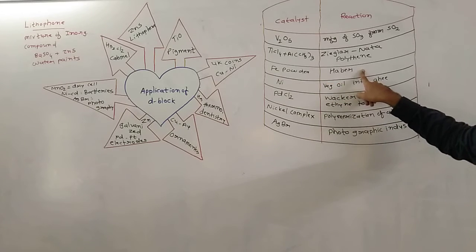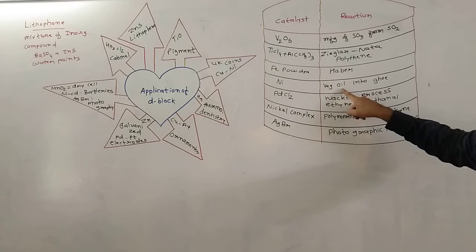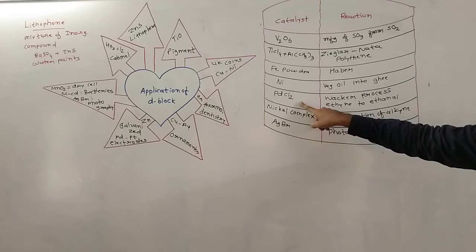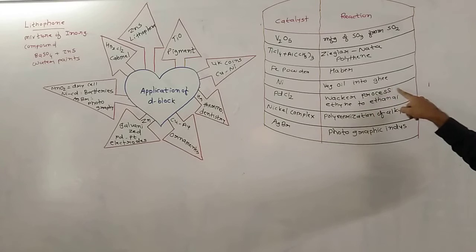Iron powder in Haber process. Nickel converts vegetable oil into vegetable ghee. Then PdCl2 in Wacker process converts ethene to ethanol.